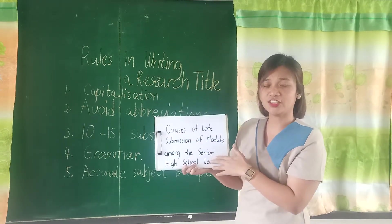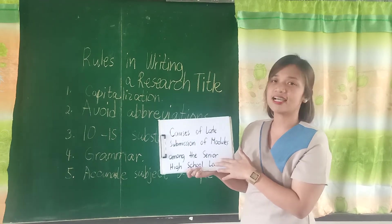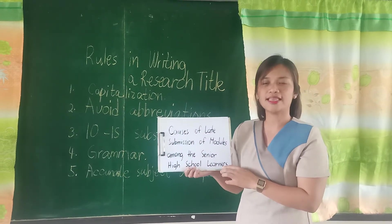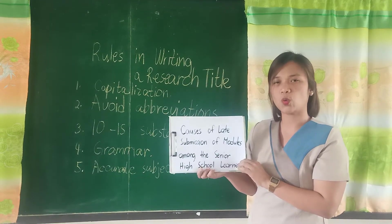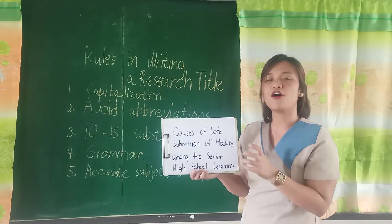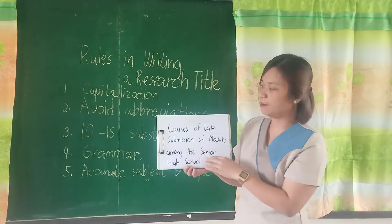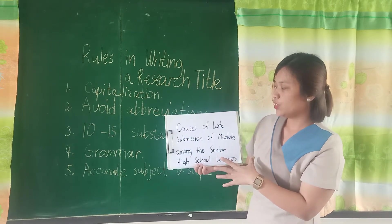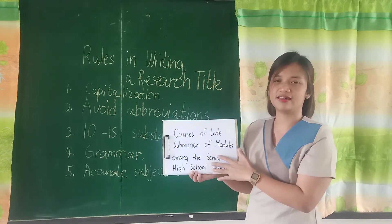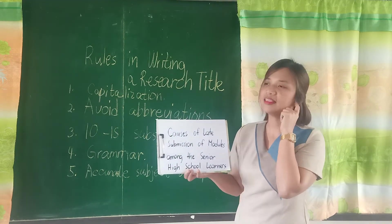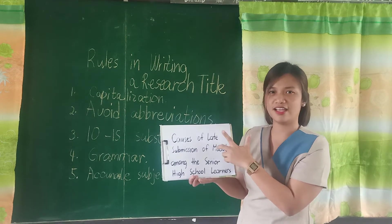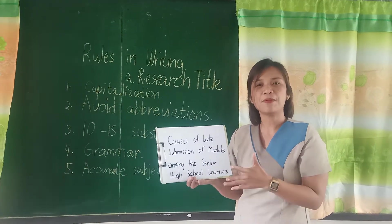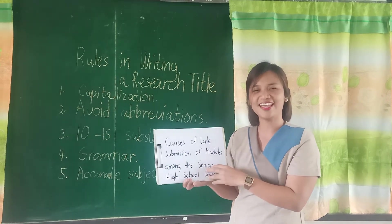There are no abbreviations used here. Next, let's count the substantive words: 1, 2, 3, 4, 5, 6, 7, 8, 9, 10, 11, 12 — it did not exceed 15 substantive words, so it fits within the required number. Grammar is okay. And we have accurate subject and scope. Also, please be mindful: if it's about causes, stick to causes only; if it's about effects, stick to effects — because it will be hard to study two things at once. Stick to one only.